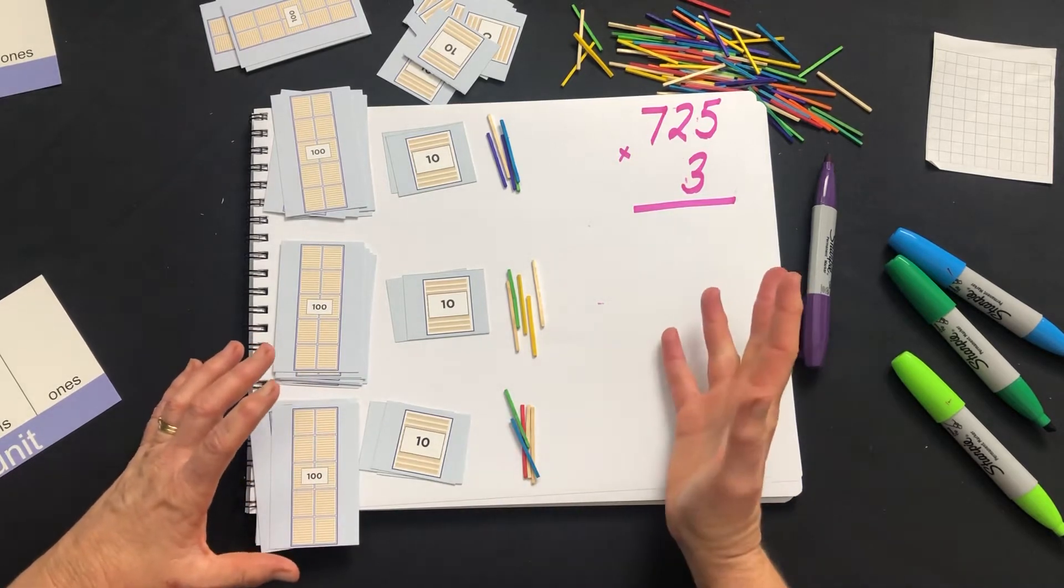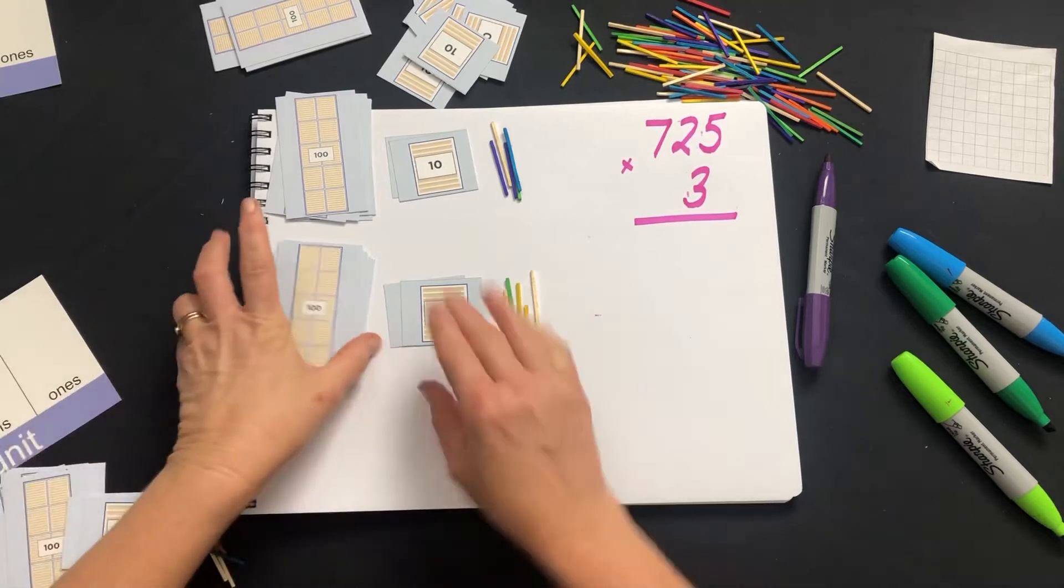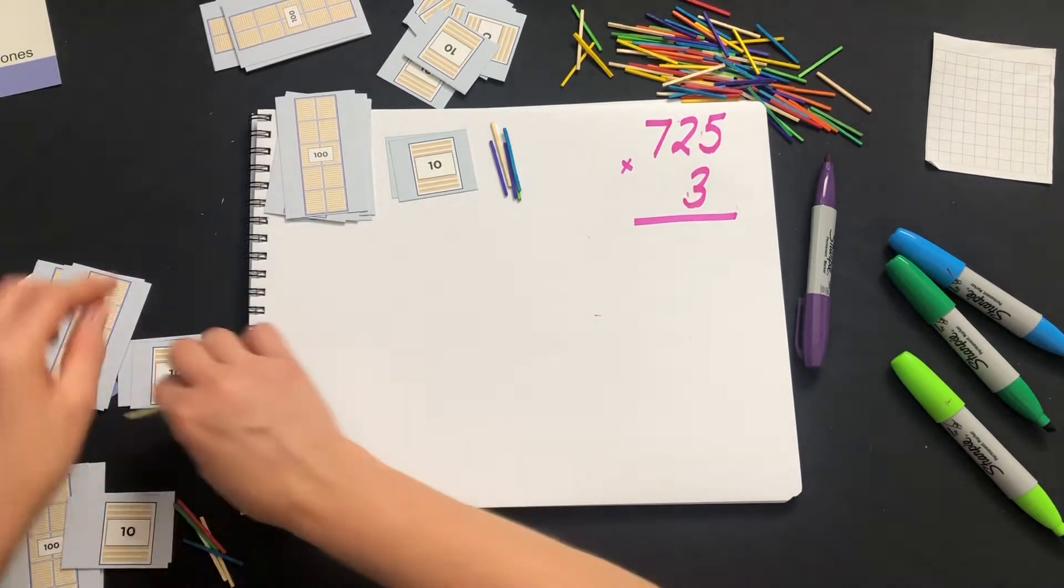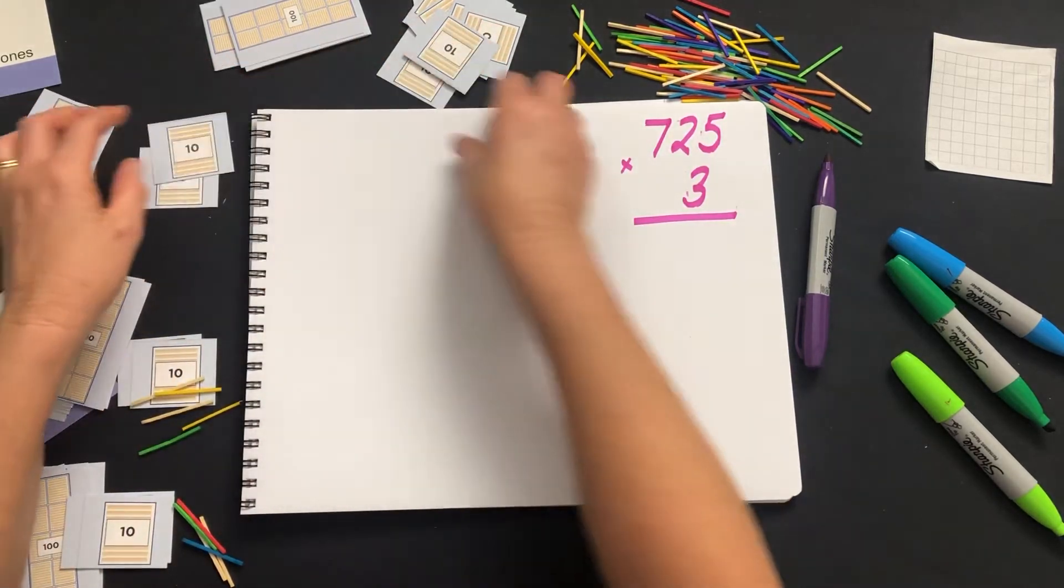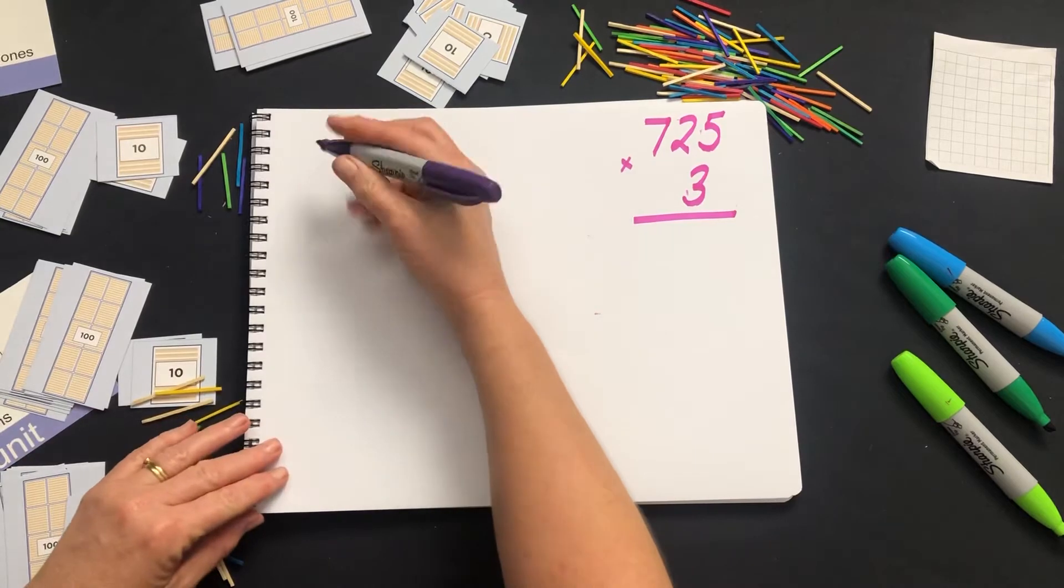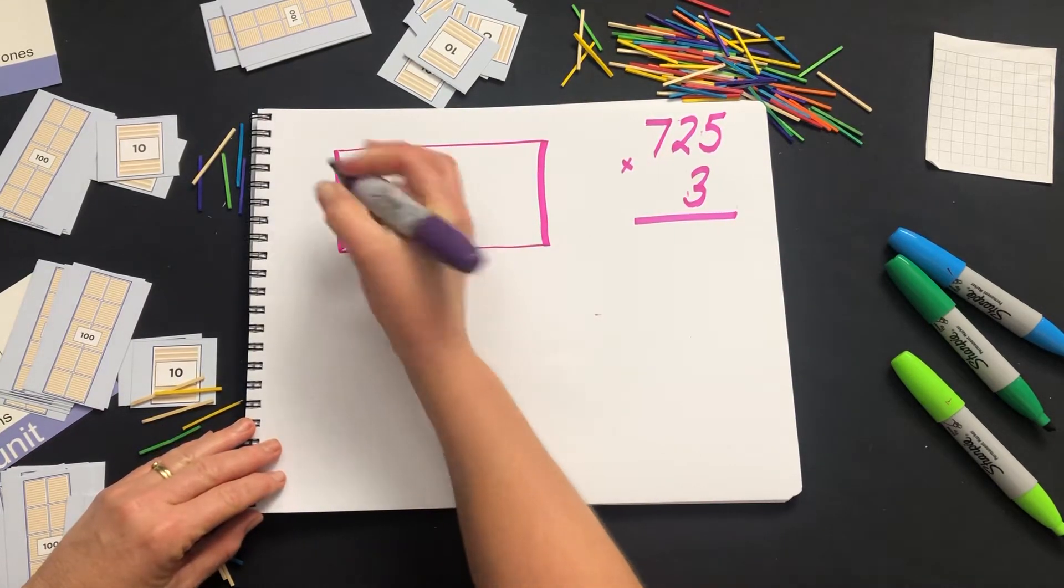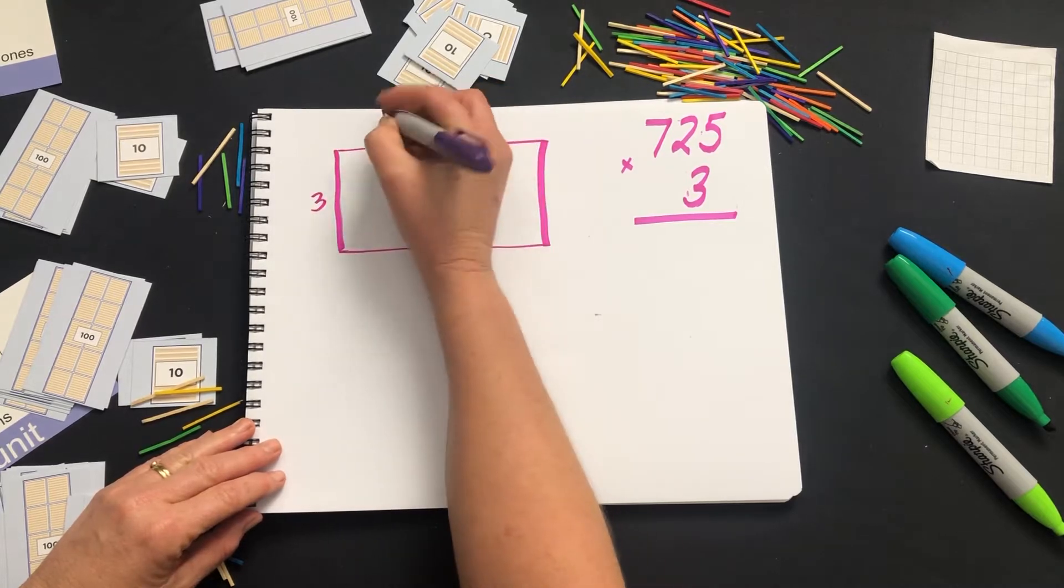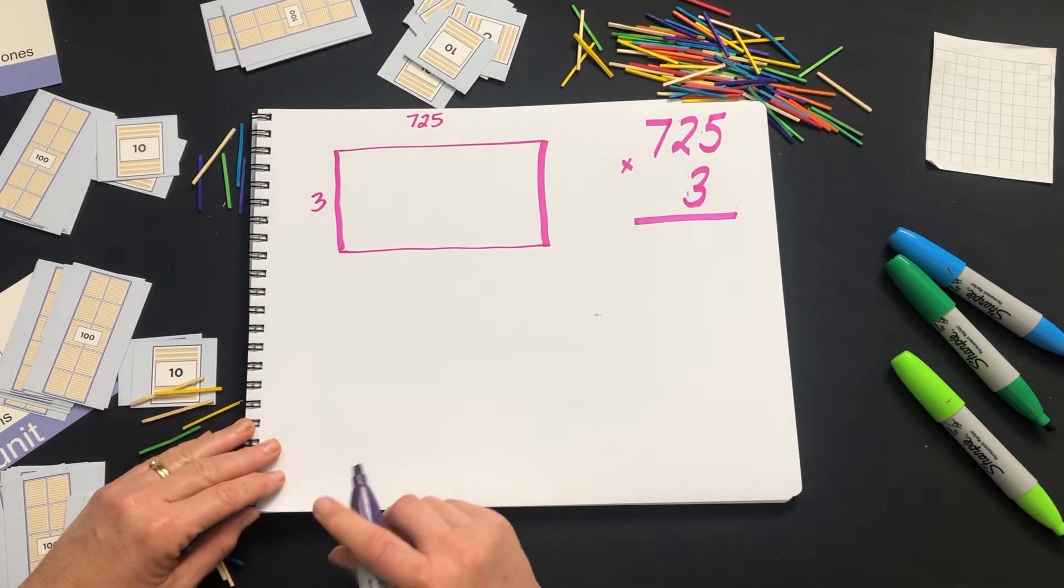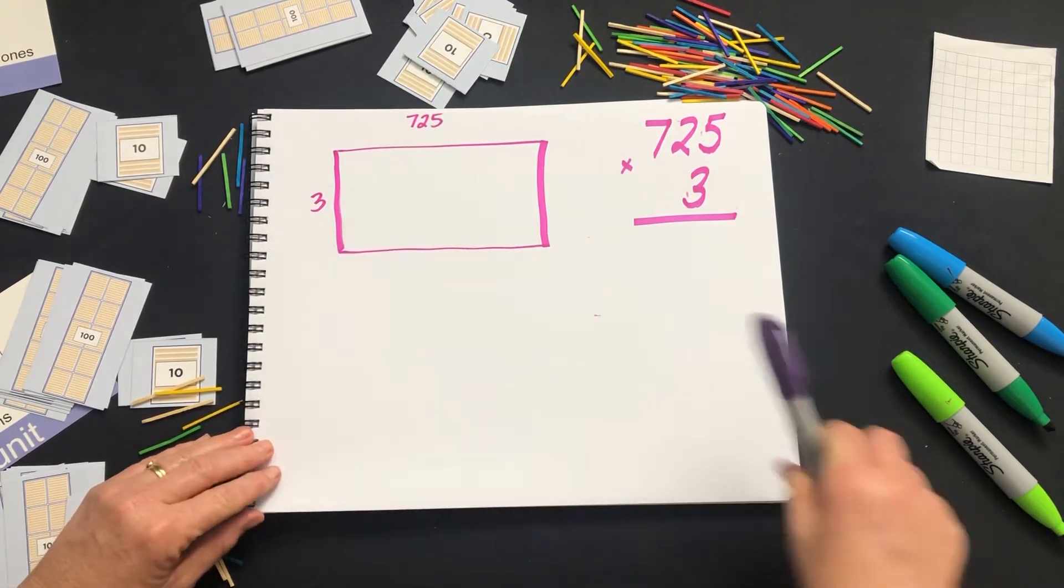Again, we can represent this problem using our concrete materials, as I've done, but also using our rectangle. So if I draw my rectangle, three lots of 725, we partition into each of our places here.